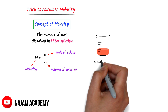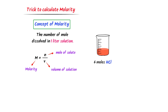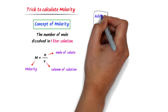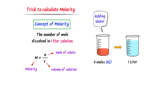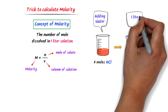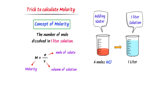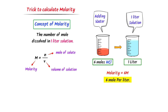For example, consider that I take 6 moles of HCl in this beaker. Now I add water to this beaker until the water level reaches the 1 liter mark. Here in this beaker, the volume of a solution is 1 liter. We know that we have dissolved 6 moles of HCl in this 1 liter solution, so the molarity of this solution is 6 M. Remember that molarity measures the number of moles of a solute dissolved in 1 liter of solution.